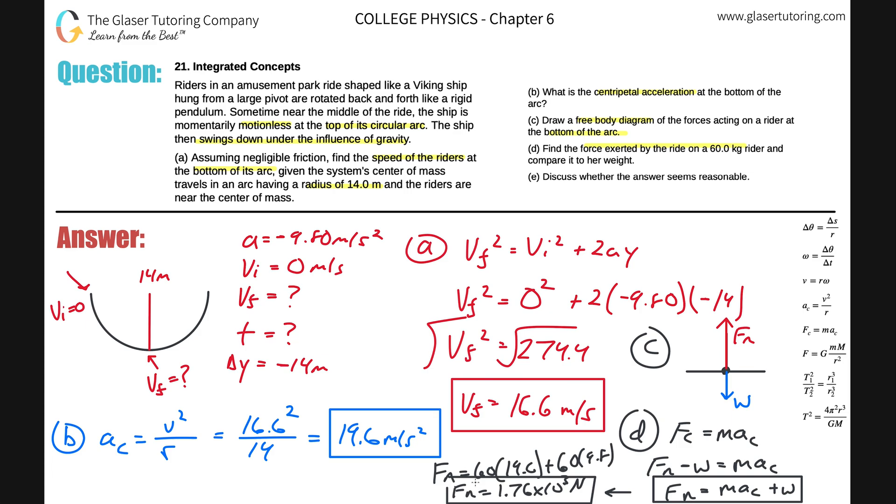It says discuss whether the answer seems reasonable. What you can do from here is you can figure out now in terms of the rider's weight. You can create a little ratio if you want. The rider's weight is going to be 60 times 9.8. So what does that work out to be? That works to be about 588 newtons. The total force that the ship is exerting on the rider looks to be about three times that amount. So, I mean, yeah, it's reasonable.